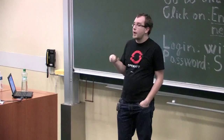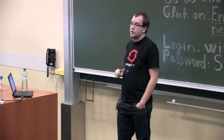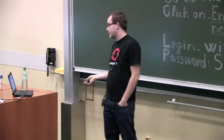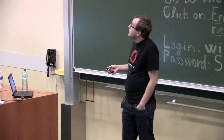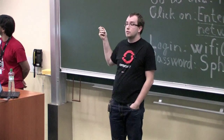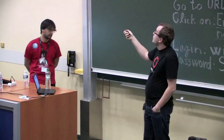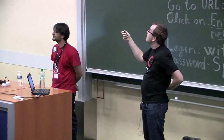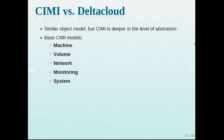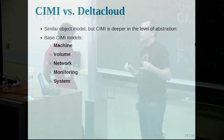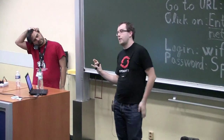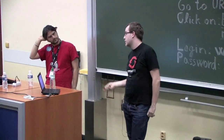How does CIMI look? It has several models: machine maps to the instance in Delta Cloud, volume maps to storage volumes, and networks maps to nothing right now because we're working on it. Monitoring and system are not yet supported. Delta Cloud is stateless — no database — so we can't store state. System is also not supported on any backend cloud we currently support; you can't create a complex system description of how several virtual machines, networking, and volumes connect together for a large deployment template.